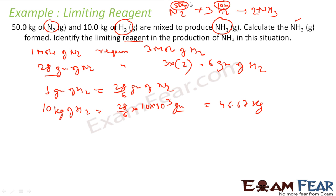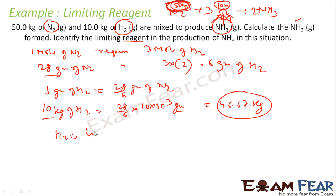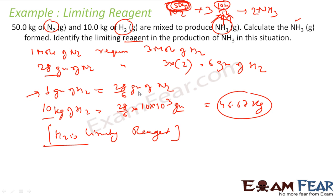But I have only 5 kg of nitrogen, which is much less than the 46.67 kg required. So nitrogen might seem extra, but actually hydrogen needs 46.67 kg of nitrogen to fully react, and we only have 5 kg — wait, let me clarify: 10 kg of hydrogen requires 46.67 kg of nitrogen, but we only have 5 kg of nitrogen. So nitrogen is actually the one in short supply. Once the nitrogen is consumed, some hydrogen remains. So hydrogen gets consumed... actually nitrogen gets consumed early — hydrogen is in excess. Hydrogen is the limiting reagent.